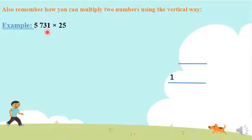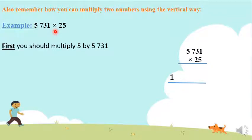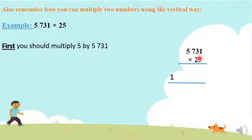Example: multiply 5,731 times 25. To multiply these two numbers, first of all, we have to write them in the vertical form. We start multiplying by the ones digit of the second number. We multiply the ones digit by each digit of the first number. So, we multiply 5 by 5,731.